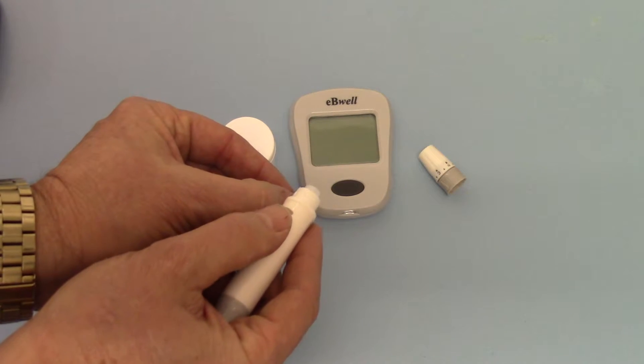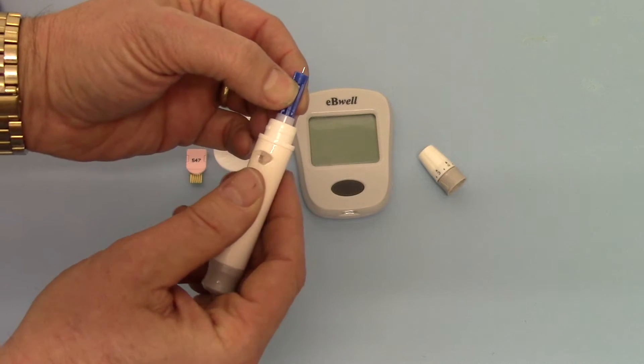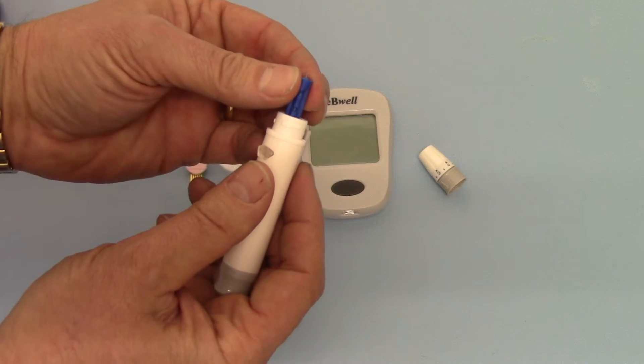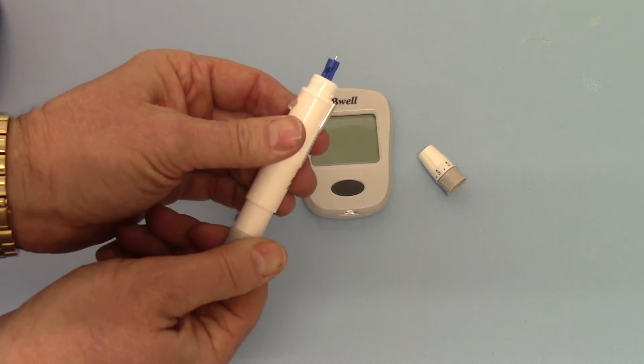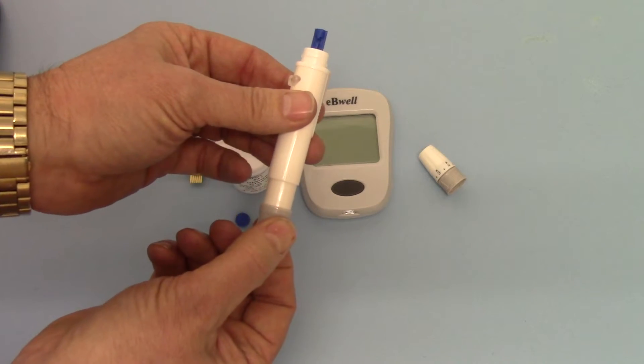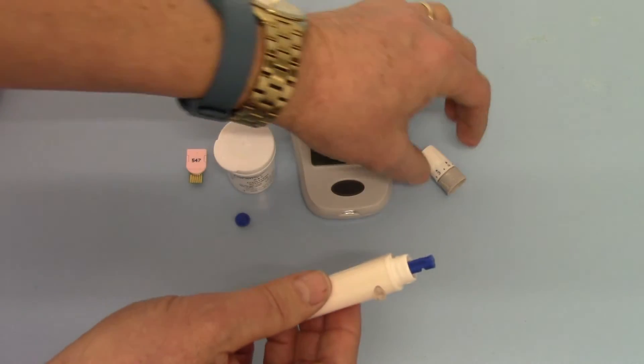You then have the sterile metal lancet protruding from the base. This is then fitted into the auto lancing device, and then the meter is primed by pulling back on the stopper at the end and that is now locked in position.